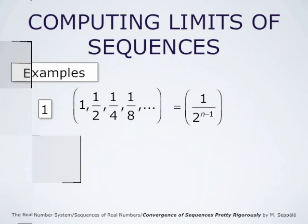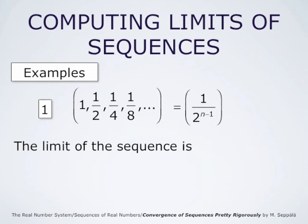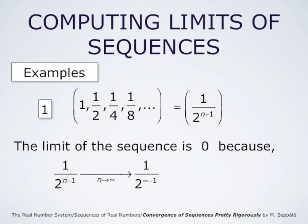To illustrate the use of this substitution, let us compute the limit of the sequence 1, 1/2, 1/4, 1/8, and so forth — that is, the limit of 1 divided by 2 to the power n minus 1. We already mentioned that the limit is 0, and it can be computed as follows: 1 divided by 2 to the power n minus 1 approaches, as n goes to infinity, 1 divided by 2 to the power infinity minus 1. But infinity minus 1 is infinity, so this approaches 1 divided by 2 to the power infinity. Since 2 is larger than 1, 2 to the power infinity is infinity, so this is 1 divided by infinity, and by the first evaluation rule, the limit is therefore 0.